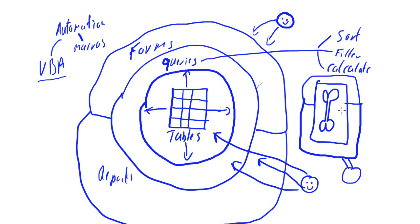So those are the types of components you have in each database application. That's enough Access theory for now. In the next video, we're going to be building our first Access database.